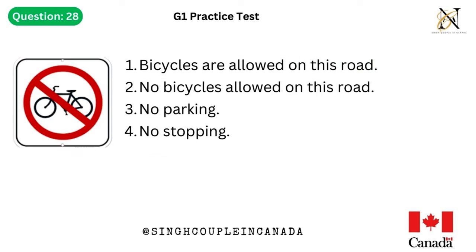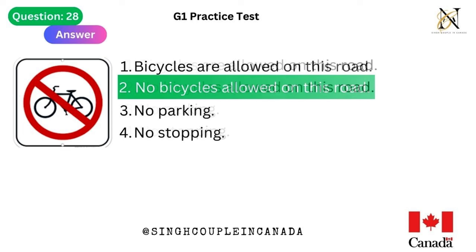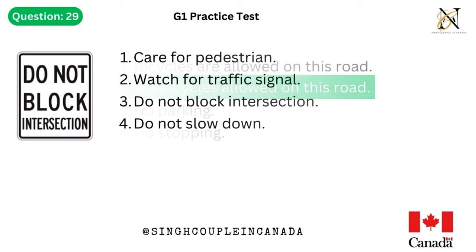Question 28. This traffic sign means: 1. Bicycles are allowed on this road. 2. No bicycles allowed on this road. 3. No parking. 4. No stopping. Answer is 2. No bicycles allowed on this road.